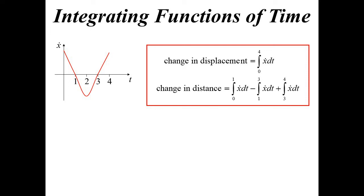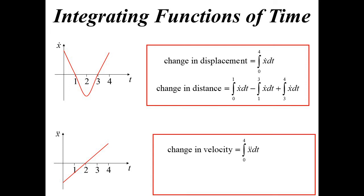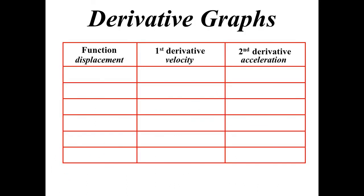The same thing applies if we have an acceleration graph: the change in velocity would be the complete integral from 0 to 4, but the change in speed we would have to break up into what's below and what's above. Essentially, we're using motion to draw derivative graphs.